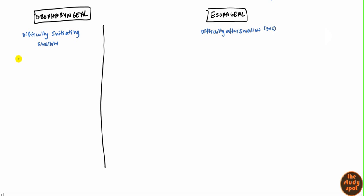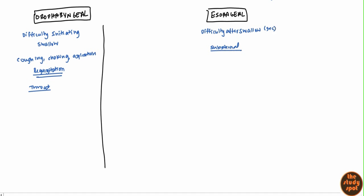Oropharyngeal is also associated with coughing, choking, or a feeling of aspiration, because the patient can't bring the food into the esophagus, so it might spill over into the trachea. A very classical finding, almost pathognomonic, would be regurgitation — regurgitation would definitely suggest oropharyngeal. When you ask the patient where the food gets stuck or where they feel pressure, they'll generally point at the throat for oropharyngeal, whereas with esophageal, they'll say it's substernal — in the chest area — so you'd need to rule out other causes of chest pain such as cardiac infarction.